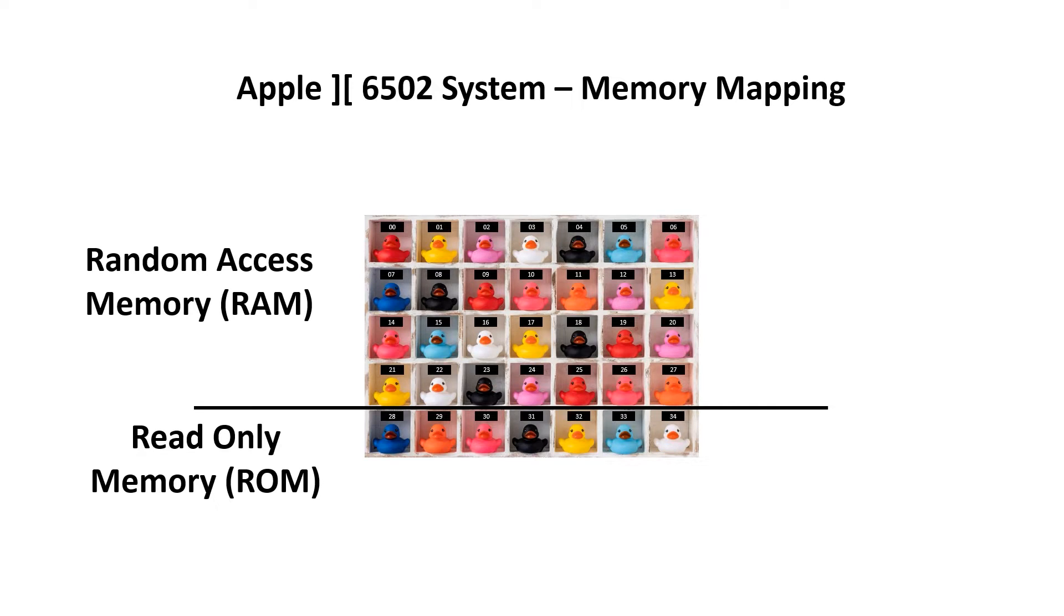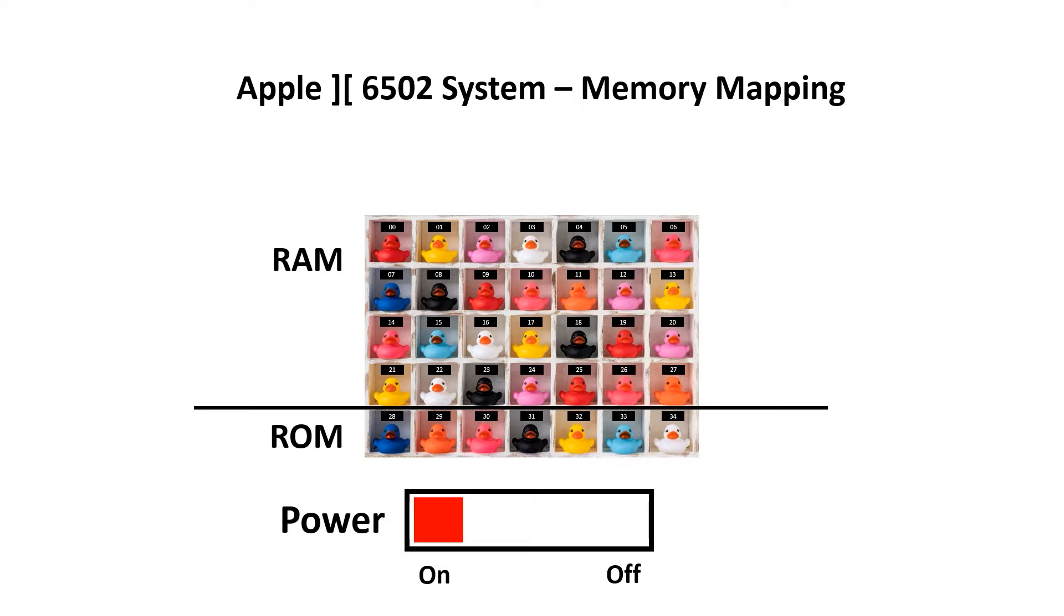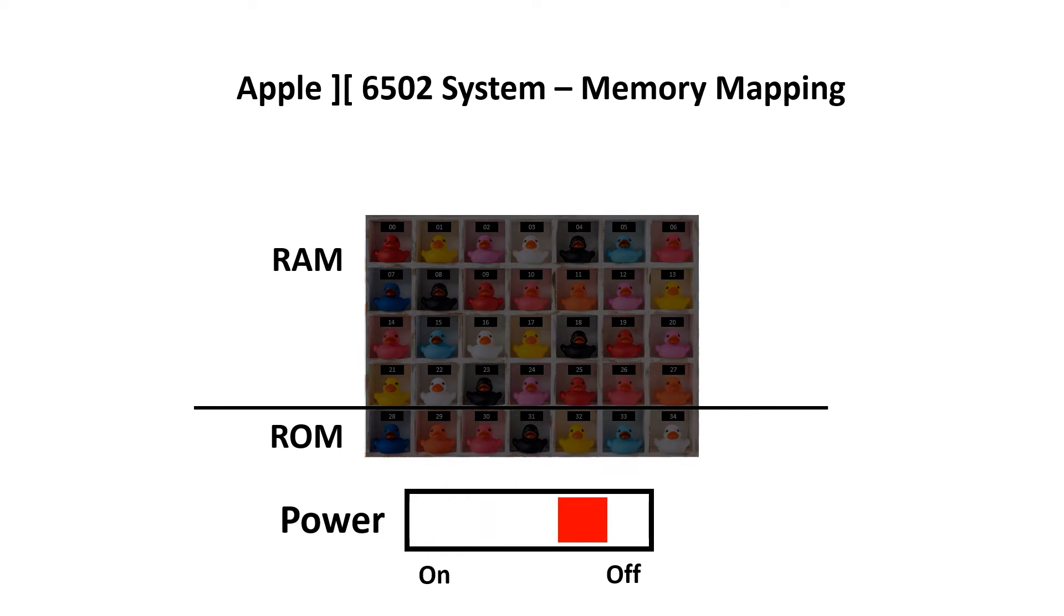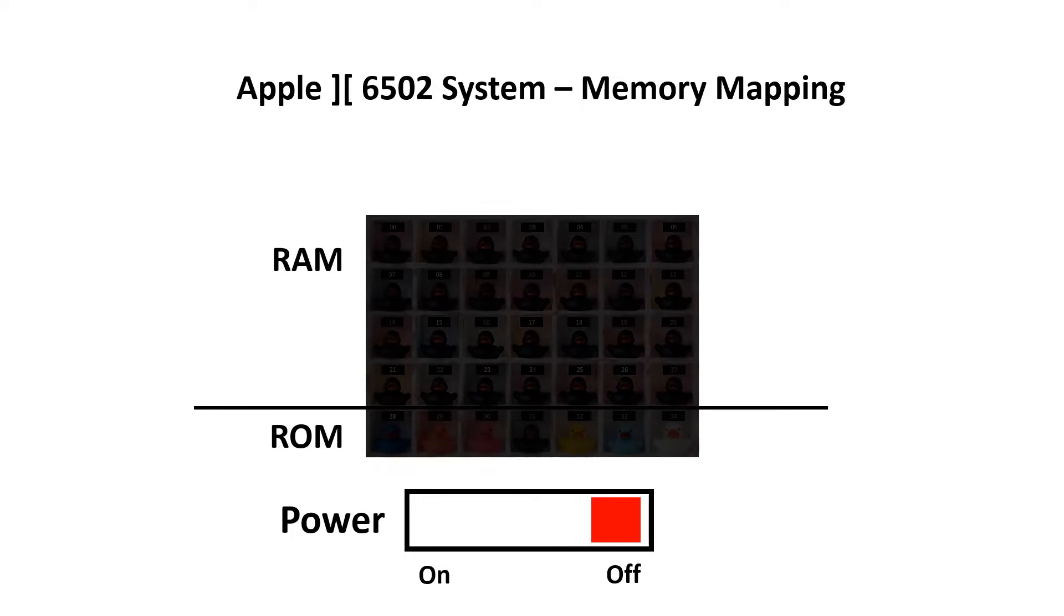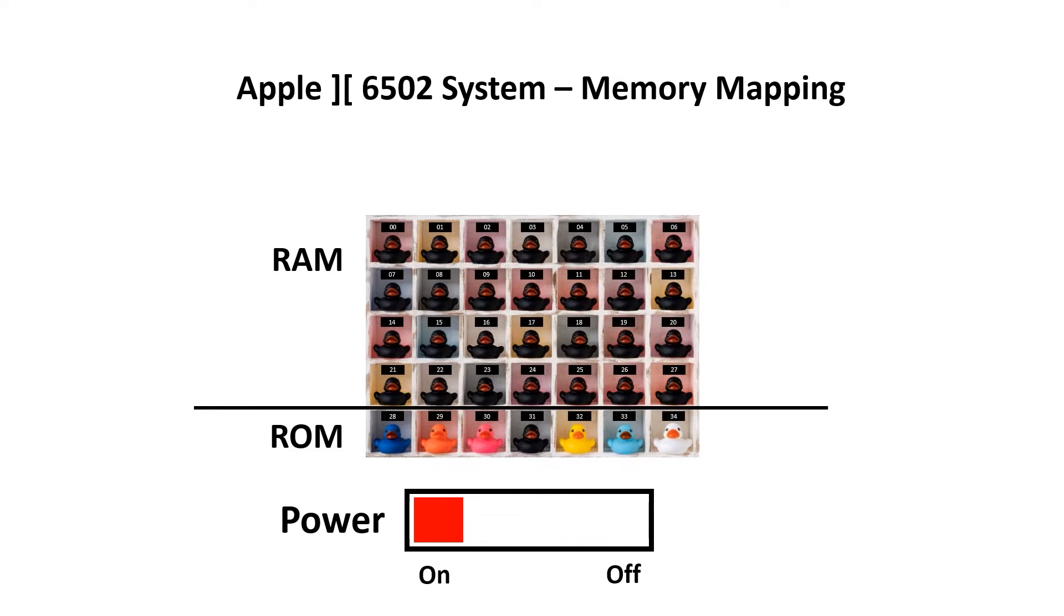Everything the 6502 talks to has to be mapped to one or several locations in the address space. The vast majority of the address space is taken up by ROM and RAM. Remember that the ROM is the permanent storage and it's read-only, whereas the RAM loses its content when the power goes off, but we can read and write to this memory.